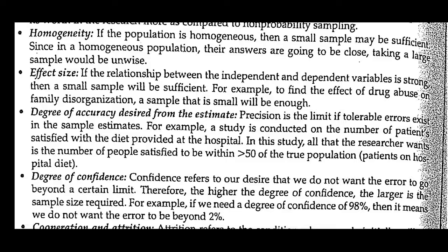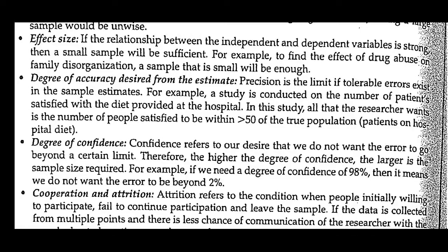The next factor is homogeneity. If the population is homogeneous, then a small sample may be sufficient, since in a homogeneous population answers are going to be close — taking a large sample would be unwise. Heterogeneous means all sample characteristics are different, while homogeneous means characteristics are the same. So with a homogeneous population, research is possible with fewer samples, but with a heterogeneous population, more samples are needed because characteristics differ.